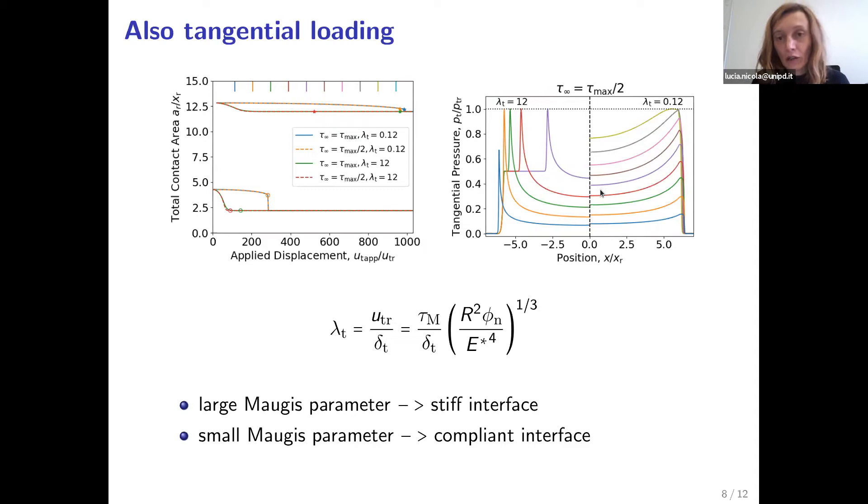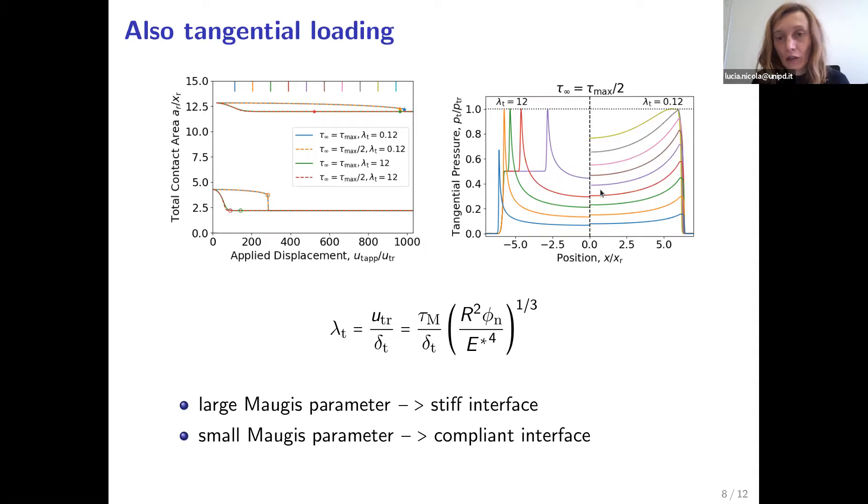But as I told you before, the best agreement with experiments is found when we have some compliance at the interface. And here you can see the comparison with the experiments in terms of total contact area versus tangential force for different normal applied pressures.